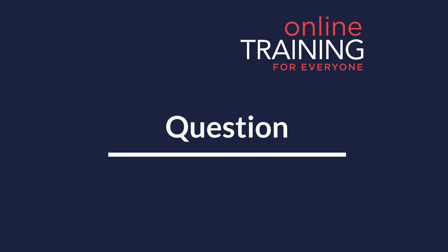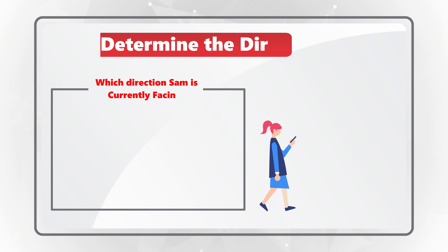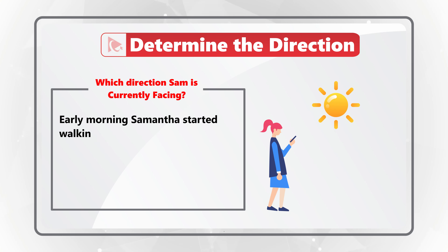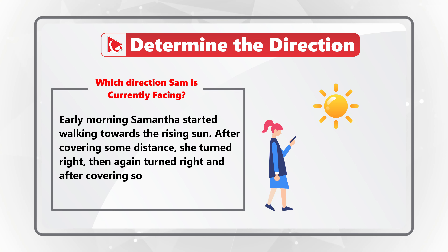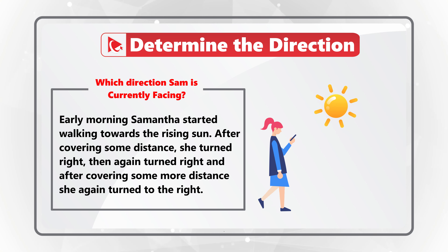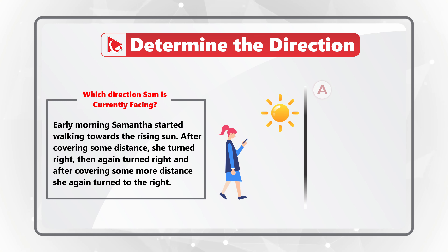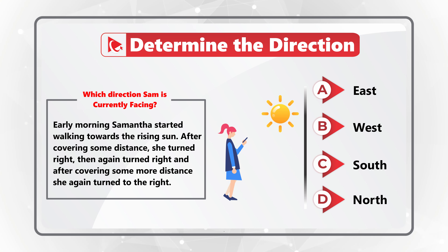Here's an exceptional question to test how well you can navigate and determine direction. Early morning, Samantha started walking toward the rising sun. After covering some distance, she turned right, then again to the right, and after covering more distance, she again turns to the right. Which direction is Sam facing right now? Choices: A. East, B. West, C. South, D. North.